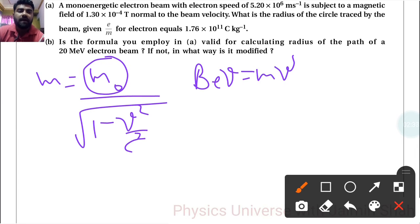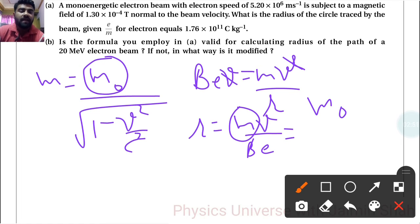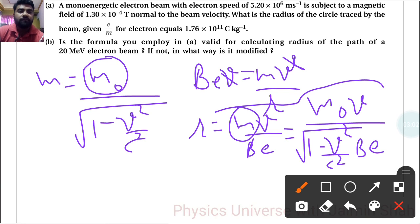We have the formula BEV = MV²/R. One V gets cancelled, so R = MV/BE. Now put this M here. Our new R will be M₀V/(√(1 - V²/C²) × B × E). This is how, by this formula, we can find the radius of the path for this energy.